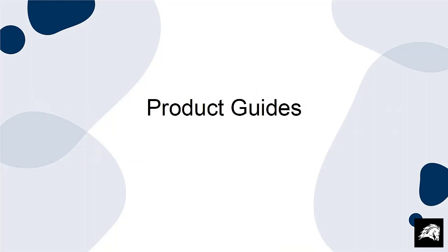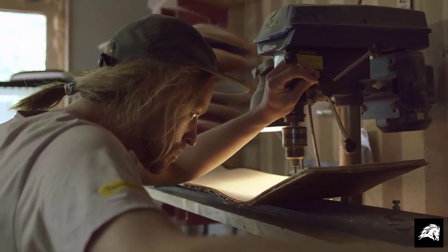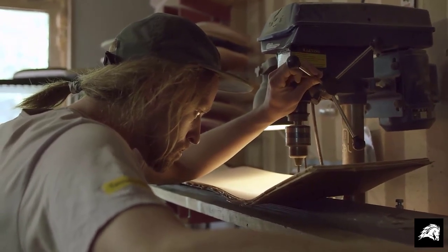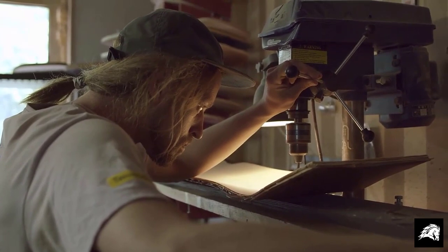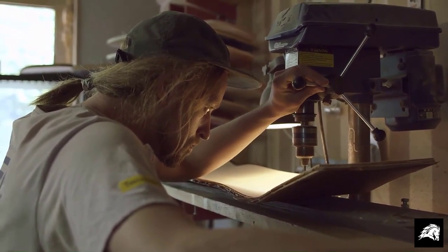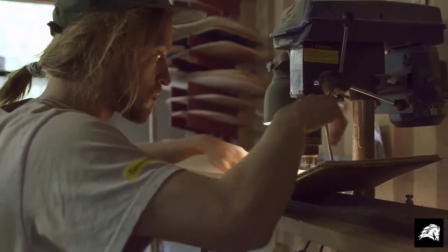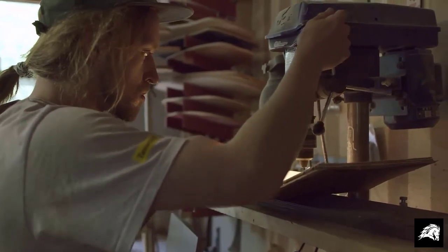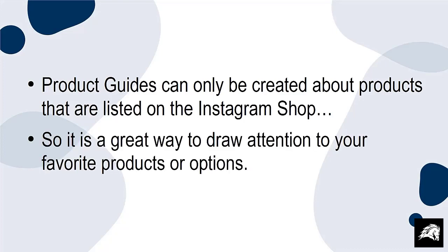Product Guides can be used to share a particular product with your audience. You can include reviews or an explanation of how the product best functions. It is a great way to explain a more complicated product — for example, the manufacturing method or materials used for your audience. Product Guides can only be created about products that are listed on the Instagram Shop, so it is a great way to draw attention to your favorite products or options.